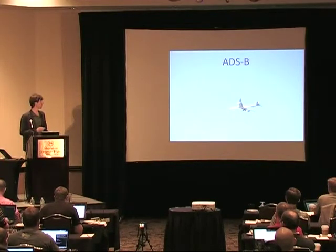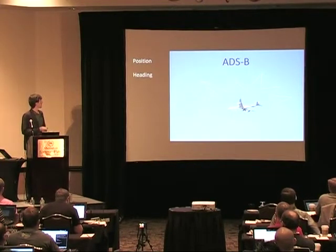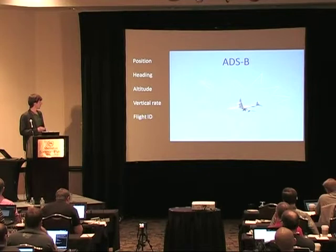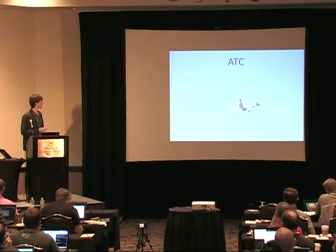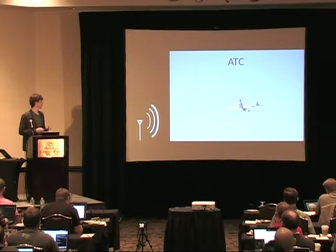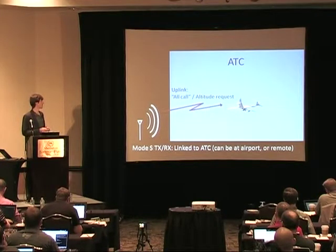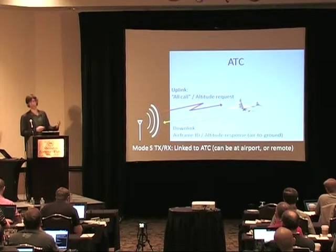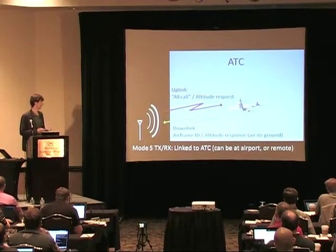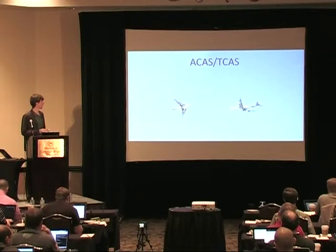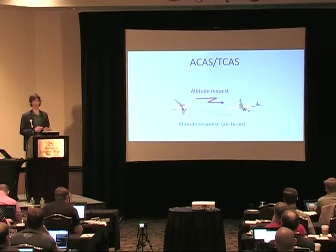So what does ADS-B actually broadcast? Such things as position, heading, altitude, vertical rate, flight ID, and the squawk code. Air traffic control systems might send up an uplink that asks for altitude and the plane sends it back. Additionally, aircraft might interrogate one another — so you can have air-to-air altitude requests.